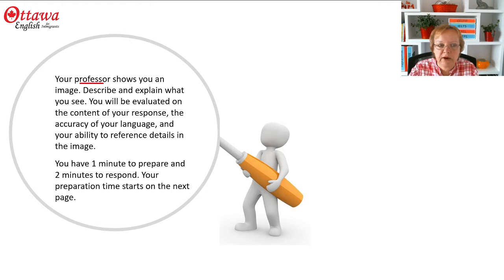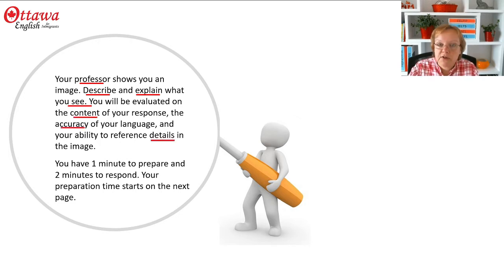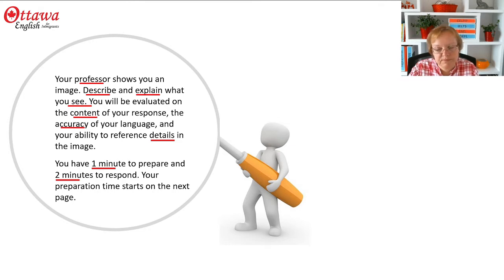So you know that you're preparing an academic presentation that describes and explains something visual. You don't know what that is yet — you only know that it's going to be either a pie chart, a table, a graph, or a bar chart. You know they'll evaluate your presentation on content, accuracy, and details. When you go to the next screen you've got one minute to prepare and the clock starts immediately, and then you have two minutes to present.